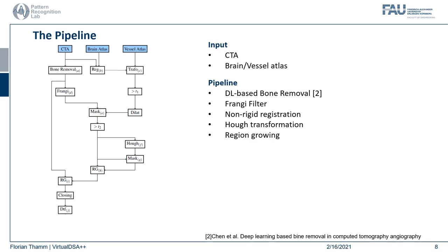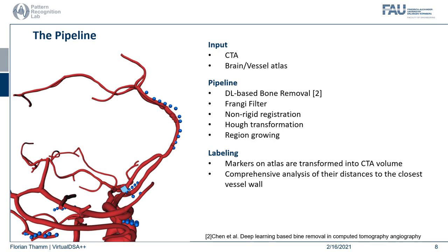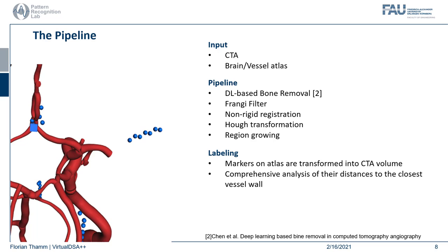These center points are used as seed points for a region growing step. This region growing result is used again for another region growing, but this time based on the boneless CTA dataset, resulting in the final segmentation, which is further refined and modeled using the DTF skeletonization algorithm. The labeling uses an intermediate result from the first region growing and markers placed originally in the Vessel Atlas. These markers are transformed into the dataset, representing the average vessel direction. If a vessel is not located nearby, this is a strong indicator for an occlusion in those respective vessels — and that's how occlusions are determined.